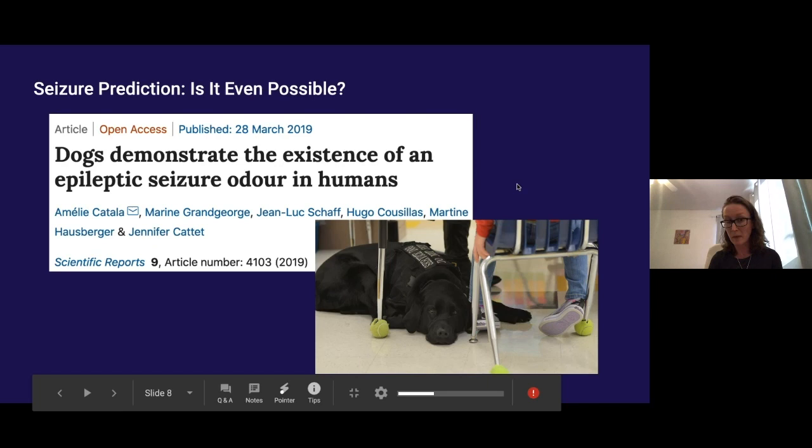So there is some brain signal that gives away that a seizure is coming. It's a bit hard to pick out what exactly it is. Epileptologists don't know exactly what the signature is and so it's almost a problem that asks for neural networks.